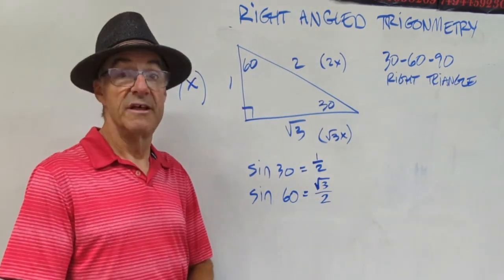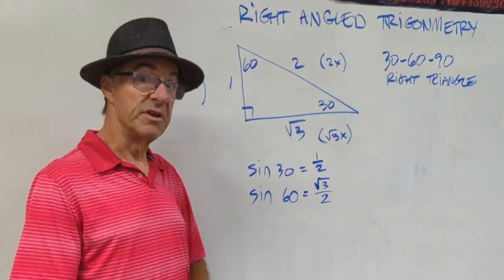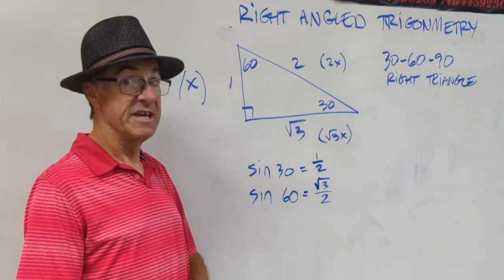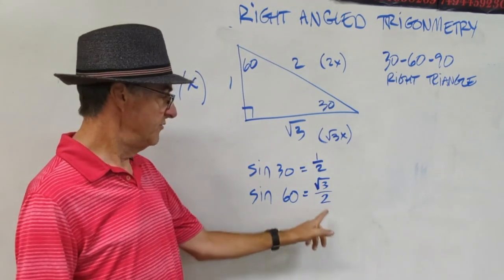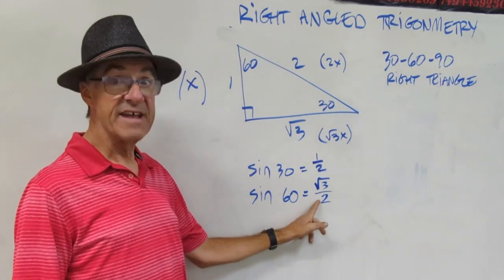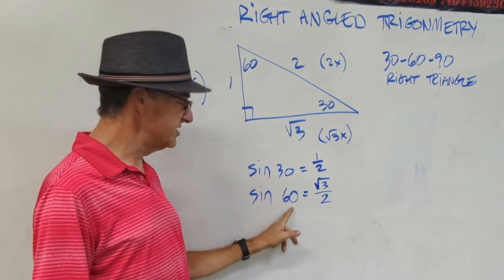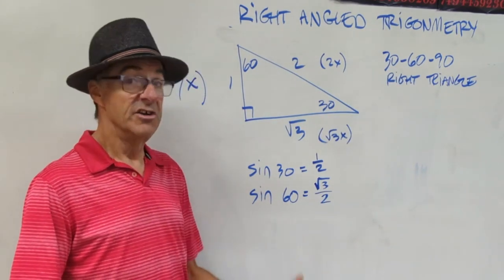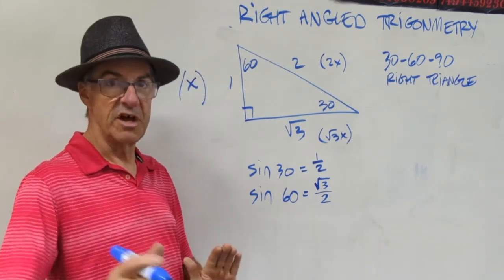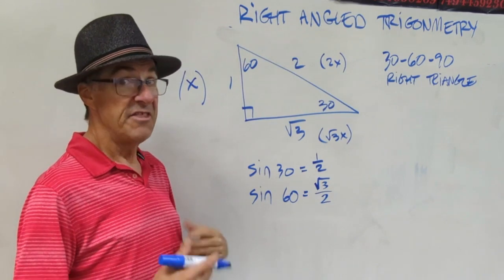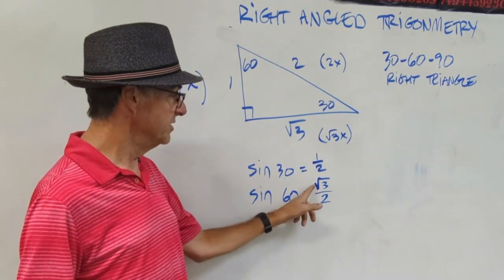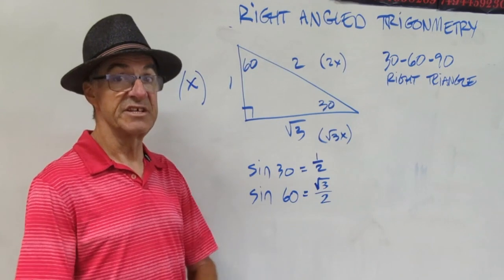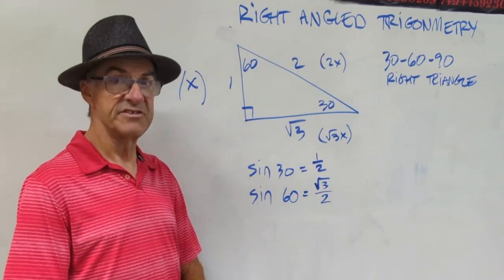An important thing to notice: if the question wants the exact value, you have to show that number. If you put cosine of 60 in your calculator, you're going to get some decimal that goes on forever — that would not be the correct answer. You need to state root 3 over 2. That's an exact answer.